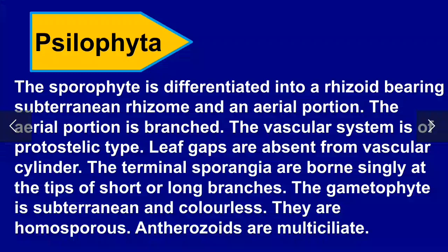Psilophyta: the sporophytic body is differentiated into aerial branches and an underground part called the rhizome. The aerial portion has a branched structure. A vascular system is present in protostelic type; leaf gaps are absent from the vascular cylinder. The gametophyte is subterranean, meaning underground, and colorless. They are homosporous and their antherozoids are multiflagellate.